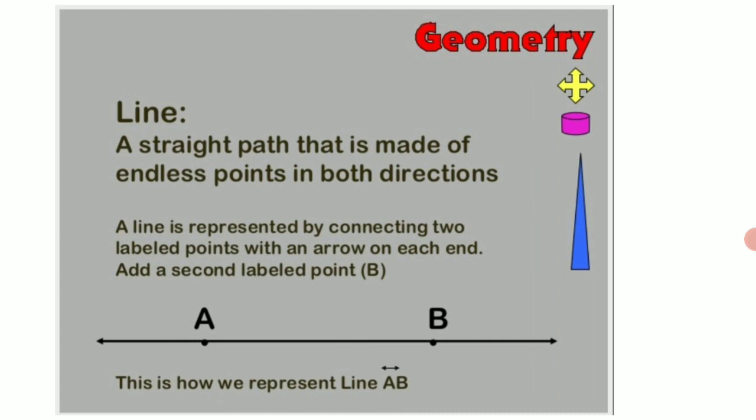Now let us come to what a line is. A straight path that is made up of endless points in both directions is said to be a line. A line is represented by connecting two labelled points with an arrow on each end. And we even add a second labelled point so that it has got two perfect end points.